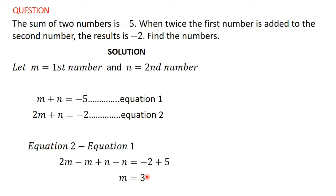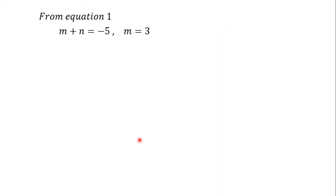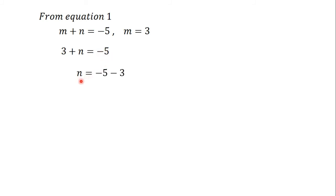Now the task is to find the second number. We know that from equation 1, m plus n is equal to negative 5, and we just found m to be equal to 3. So if m is equal to 3, we can replace all the m's with 3. So 3 plus n is equal to negative 5. If we make n the subject, n will give us negative 8.